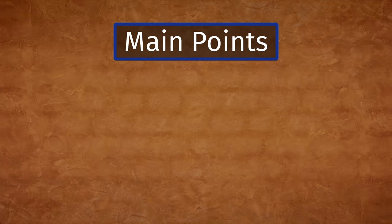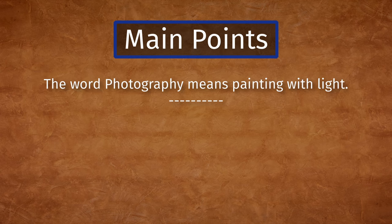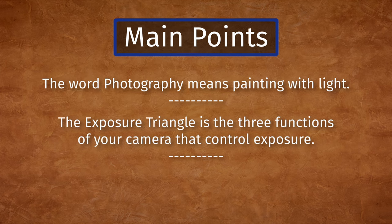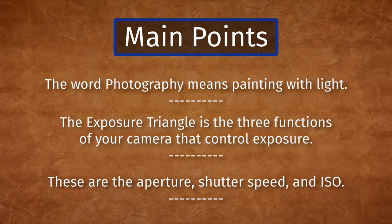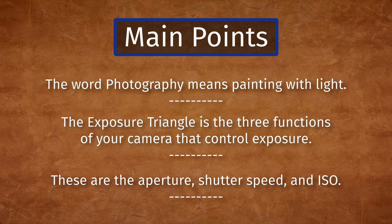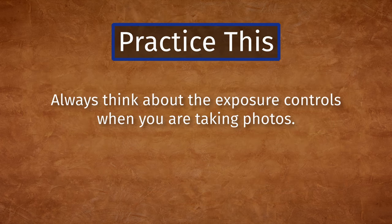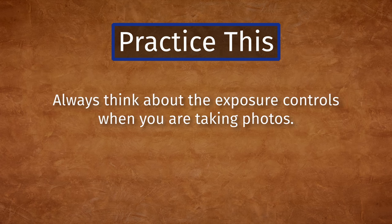The main points from this lesson are: the word photography means painting with light. The exposure triangle consists of three functions of your camera that control exposure — these are the aperture, shutter speed, and ISO. Practice this to improve your photography, and always think about exposure controls when you're taking photos.